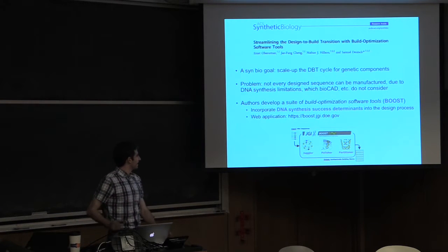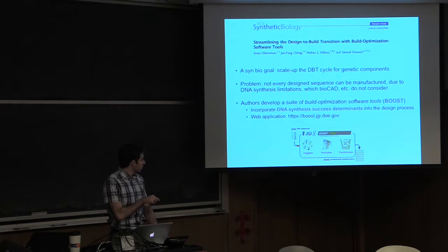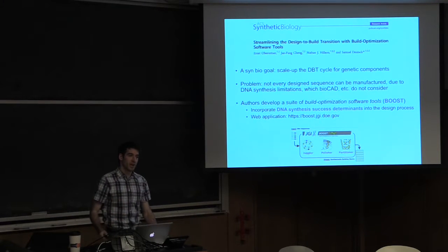It's like false. But what it does is it just incorporates these determinants into the process. So we have this Juggler, which juggles codon optimization. This Polisher, which unites the codon optimization with sequence constraints. And then Partitioner, which gives you the plasmids to synthesize.